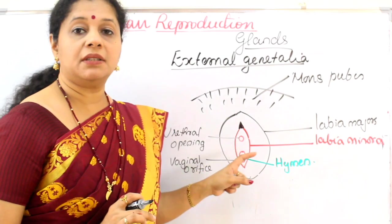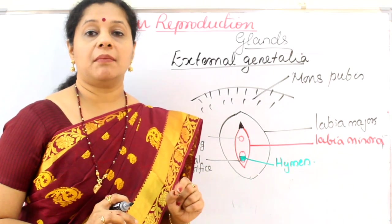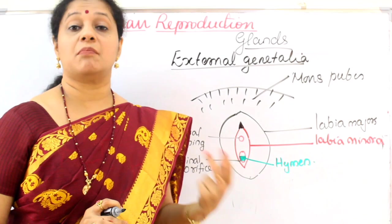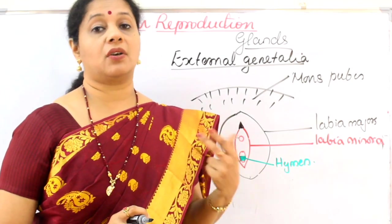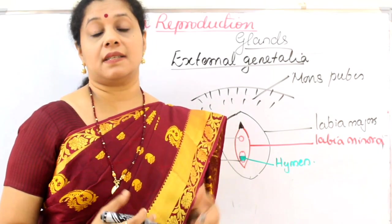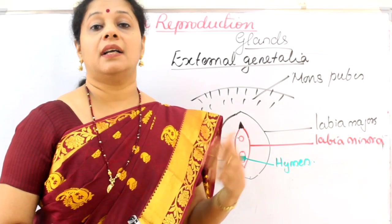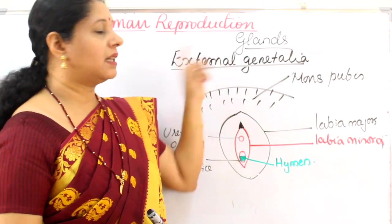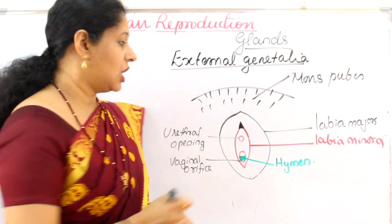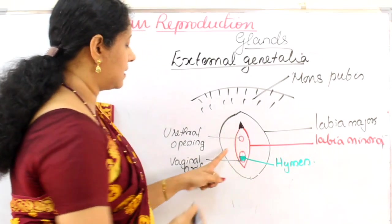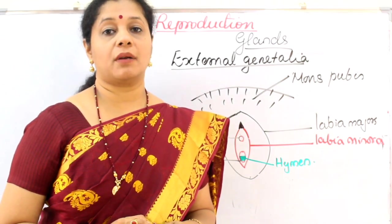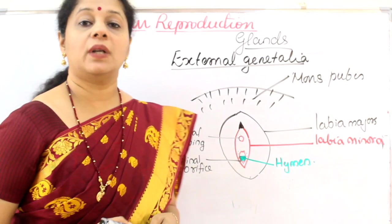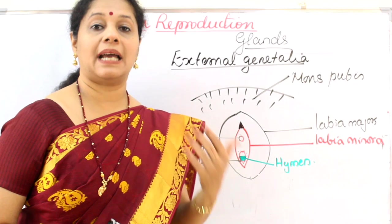The opening of the vagina is partially covered by a membranous structure called the hymen. The hymen was historically considered a symbol of virginity, but we now understand it can break during physical exercise, acrobatics, or other activities, so its presence or absence has no scientific basis as an indicator of virginity. Associated glands include Skene's glands or paraurethral glands around the urethral opening, which secrete a milky fluid, and Bartholin's glands around the vaginal cavity, both of which aid in the copulation process.